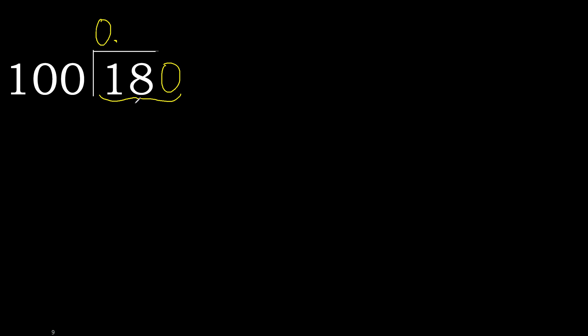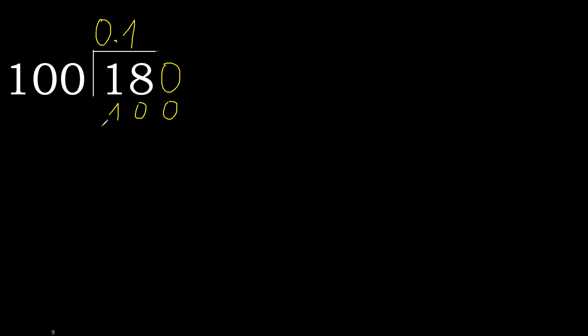180 is not less, therefore work with 180. 100 multiplied by which number is nearest to 180 but not greater? 100 multiplied by 2 is 200 — is greater. Multiplied by 1 is 100 — is not greater. Ok. Subtract: 80. Next.